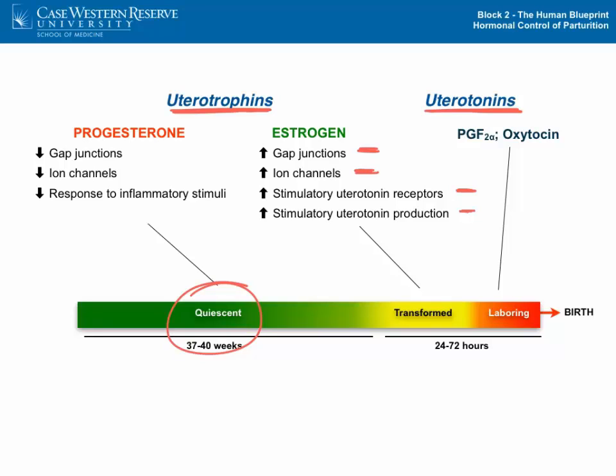The major uterotonins of the uterus are prostaglandin F2-alpha and oxytocin. Prostaglandin F2-alpha will not only stimulate contractions of the myometrium, but will also cause the cervix to soften and dilate. Oxytocin is a potent stimulator of uterine contractions.